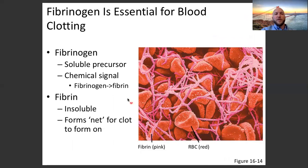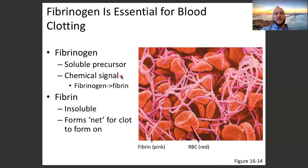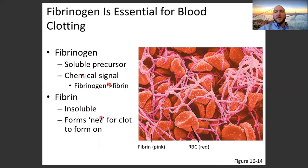Fibrinogen is essential for clotting. Like pepsinogen, the '-ogen' suffix tells us it's an inactive precursor. Fibrinogen is the inactive, soluble precursor that floats through our body. When we get a cut, certain chemical signals are released, and fibrinogen is converted into fibrin. Fibrin is insoluble and forms a net — you can see this pink net in the image — creating a clot over the cut.